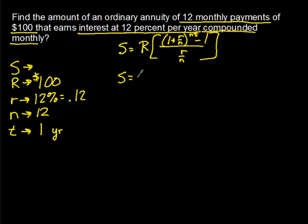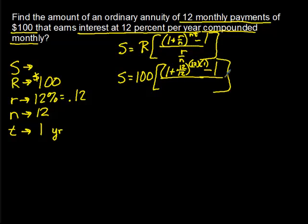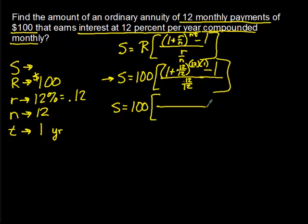Filling in everything we know: S equals 100 times the quantity of 1 plus 0.12 over 12, raised to the 12 times 1 power, minus 1, all over 0.12 over 12. We simplify: 0.12 divided by 12 equals 0.01, and 12 times 1 equals 12. So S equals 100 times the quantity of 1 plus 0.01, raised to the 12th power, minus 1, all over 0.01.